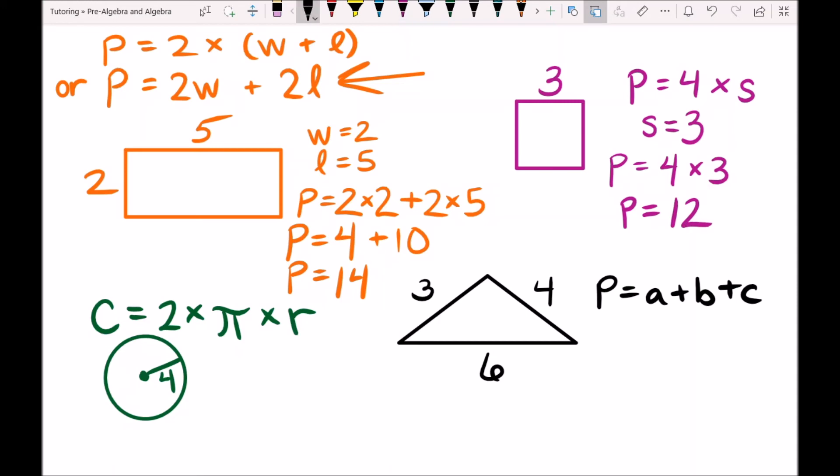Our triangle has 3 sides of different length so we simply add them all together to get our perimeter. 3 plus 4 plus 6 so our perimeter is equal to 13.